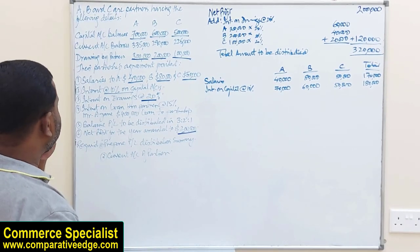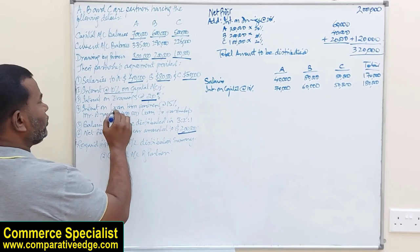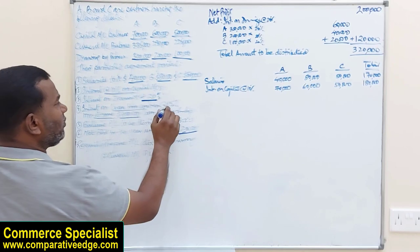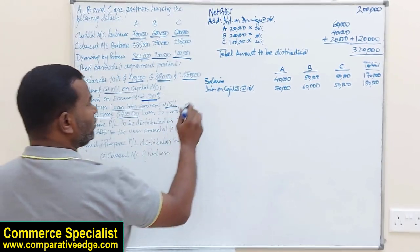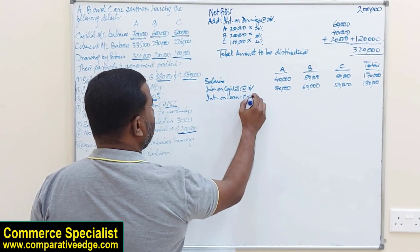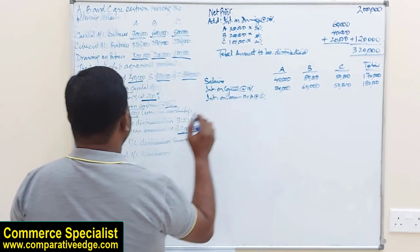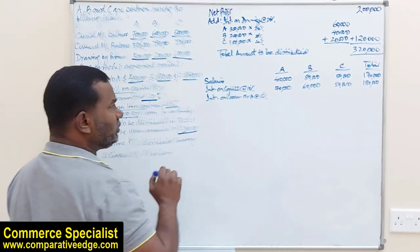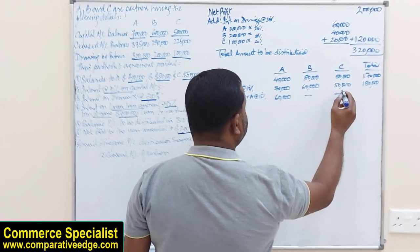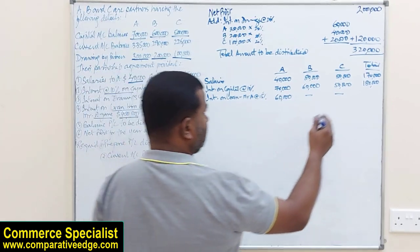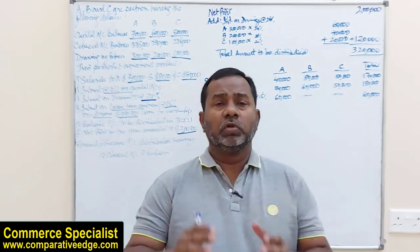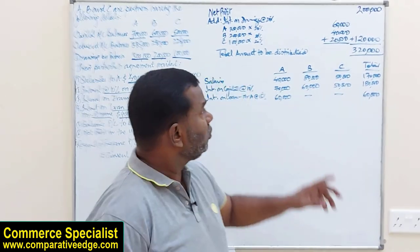We also have to pay interest on loan to Mr. A. The loan amount is 400,000 and the interest rate under the partnership agreement is 15%, so 15% of 400,000 is 60,000 to be paid to Mr. A. Nothing is paid to B and C for loan interest since they never gave a loan to the firm. Total interest on loan is 60,000.